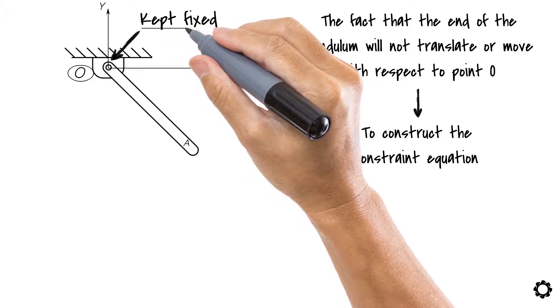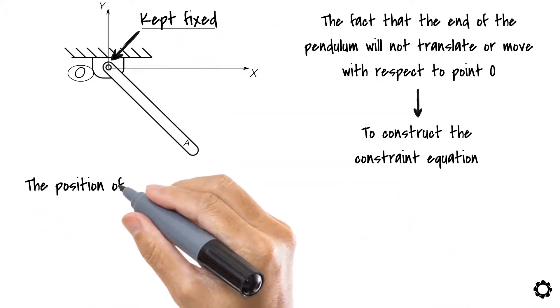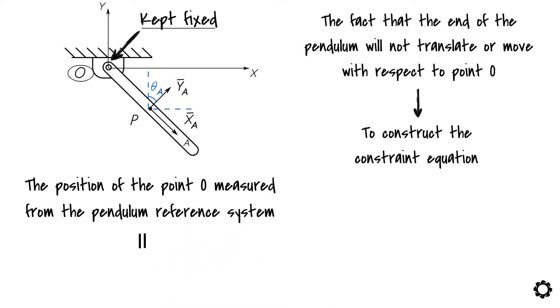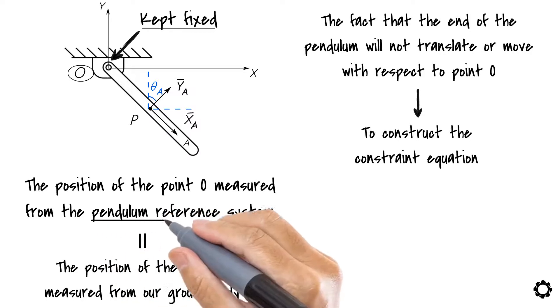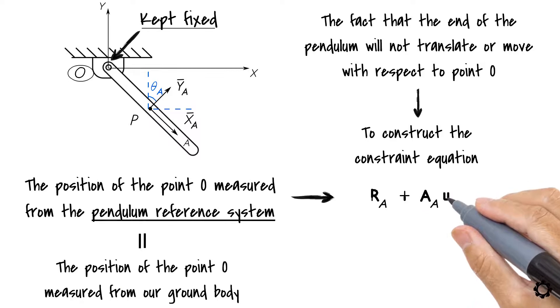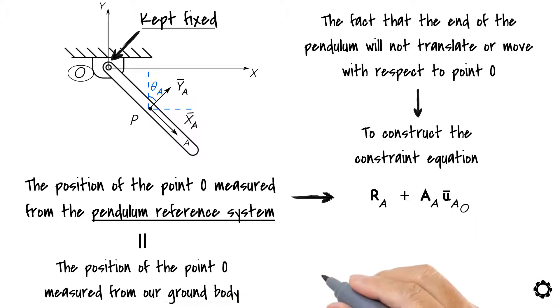To enforce the constraint of zero displacement, we say that the position of the point O measured from the pendulum reference system must be equal at all times to the position of the point O measured from our ground body. The position of point O measured from the pendulum reference system can be written as R_A plus A_A U_bar_AO, and the position of the point O measured from the ground body can be written as R_O plus A_O U_bar_OO.